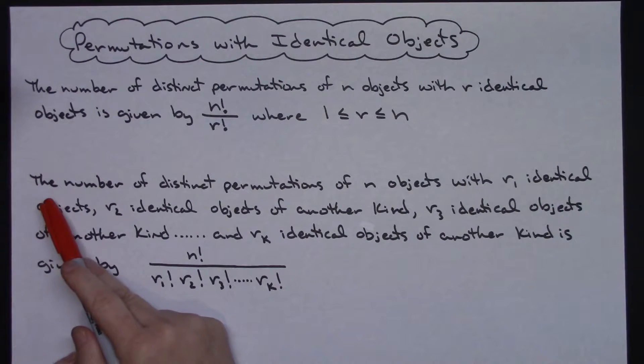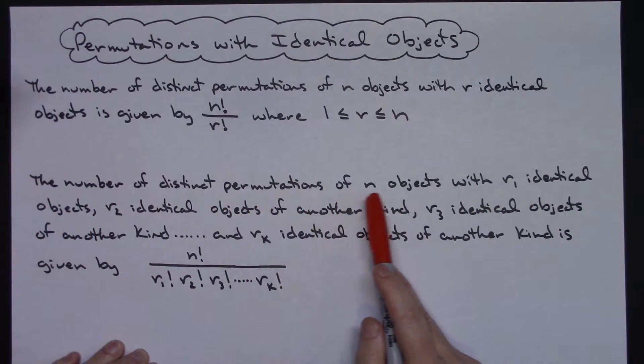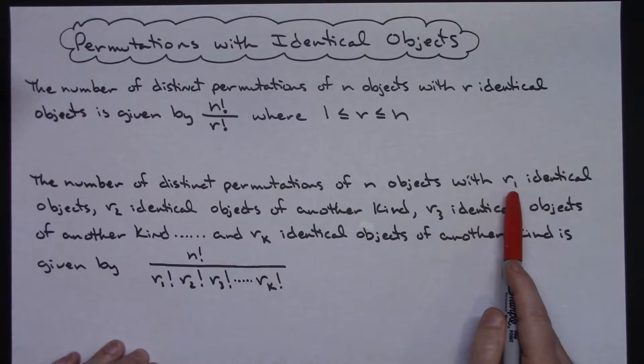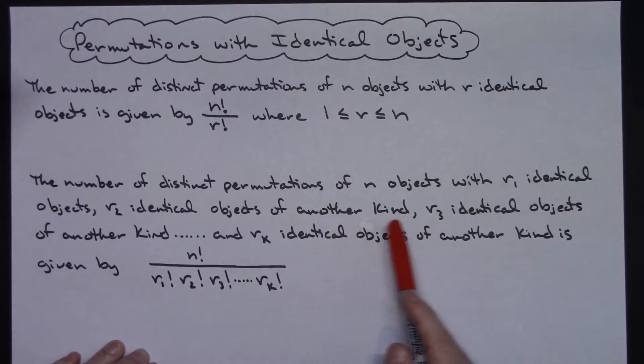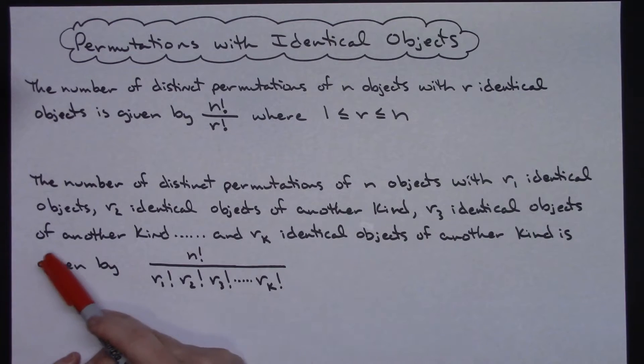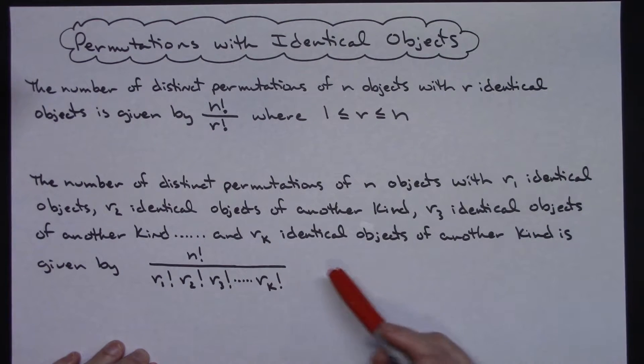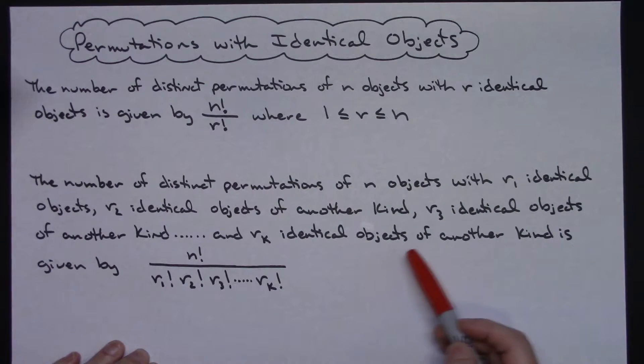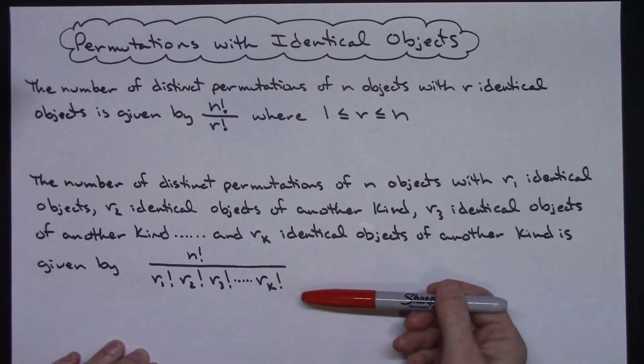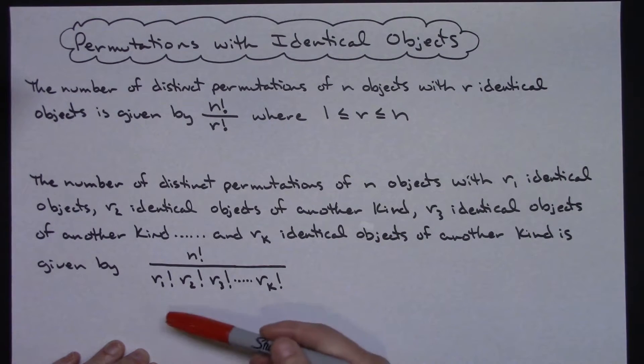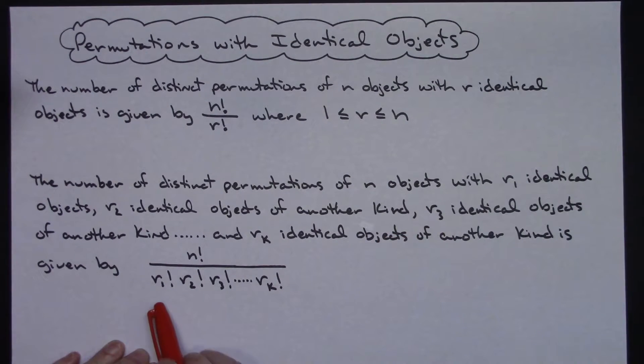For our second formula, the number of distinct permutations of n objects with r sub 1 identical objects, r sub 2 identical objects of another kind, r sub 3 identical objects of another kind, so forth and so on, till we get r sub k identical objects of another kind is given by n factorial over all of those different factorials multiplied. So r sub 1 factorial times r sub 2 factorial, r sub 3 factorial times however many you would have, r sub k factorial.